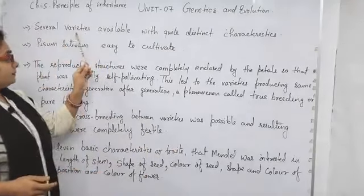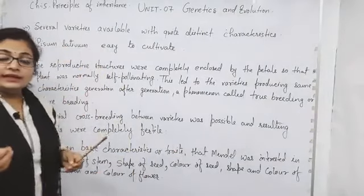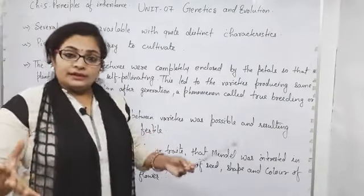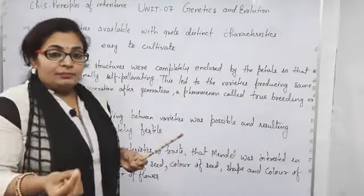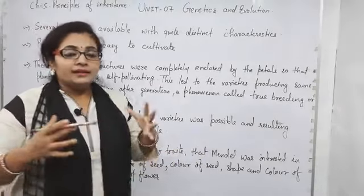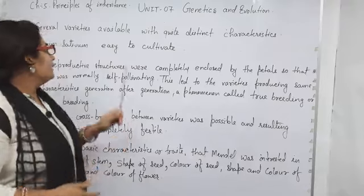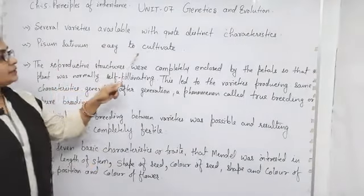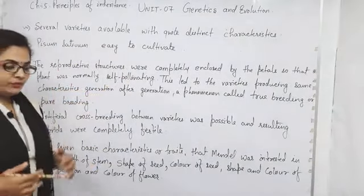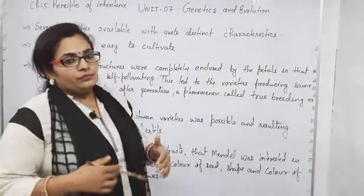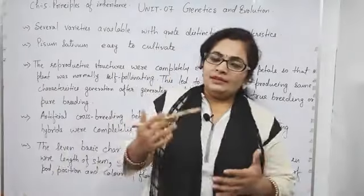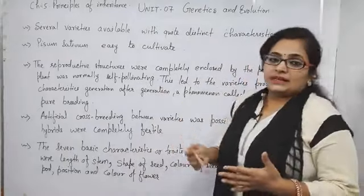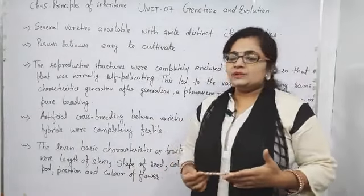There are several advantages of Pisum sativum over other species — you can observe many different varieties in a single plant. Mandel observed varieties in different ways. Pisum sativum was easy to cultivate; the cultivation step was very easy. This is also an advantageous feature of Pisum sativum over other species.